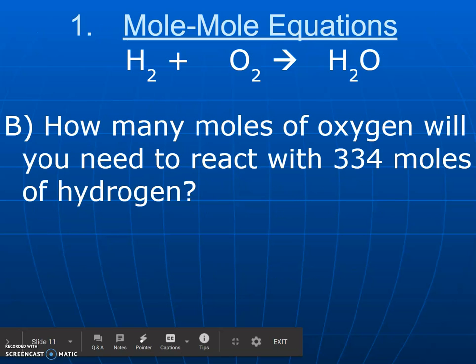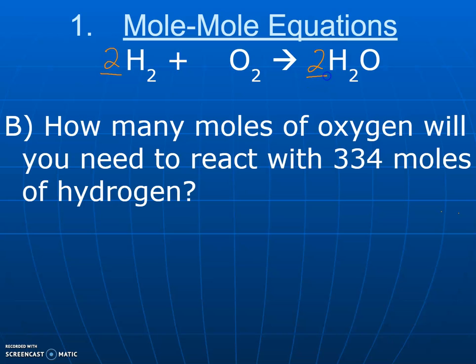Here's example number two. Exact same equation, we're going to balance it as well: two H2 plus one O2 gives us two H2O. But in this problem, you're going to say how many moles of oxygen it will take to react with 334 moles of hydrogen. So here I have 334 moles of hydrogen as my given, and I want to know how many moles of oxygen is my unknown.